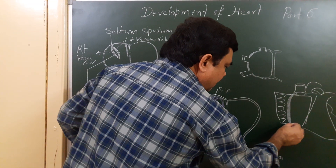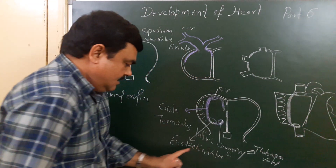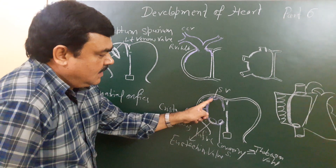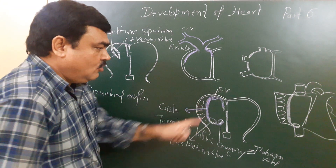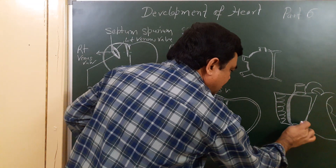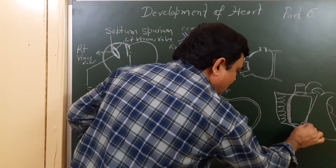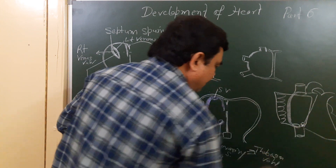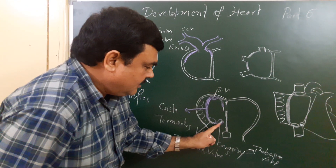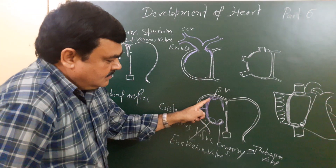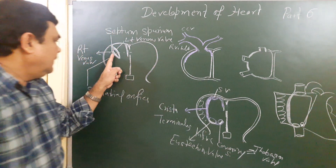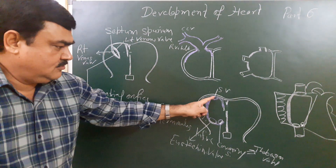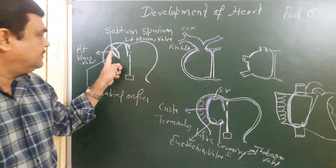The valve of the inferior vena cava — the Eustachian valve — is formed by the right valve of the sino-atrial orifice. The opening of the coronary sinus and its valve, the Thebesian valve, are also formed by the right valve of the sino-atrial orifice. So all these structures are formed by this right valve.